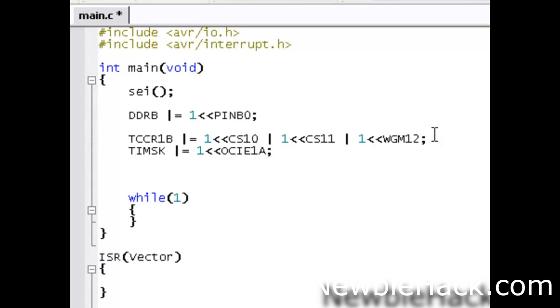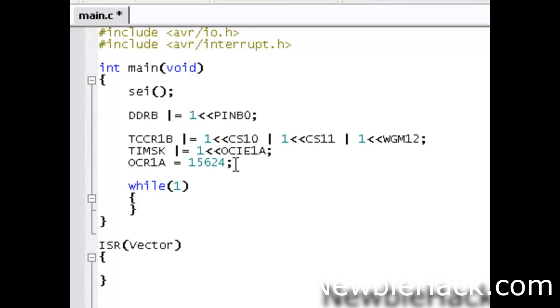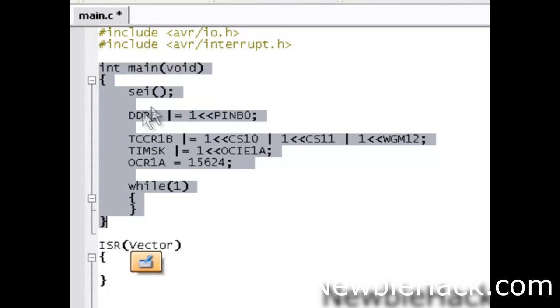Now, we can go ahead and access our OCR1B register, or 1A register. And we're going to make that equal to the number that we want it to compare with the TCNT1. So, we're going to go ahead and add the OCR1A register. And we're going to set this one to 15624, which is the compare register. Believe it or not, our main routine is actually finished. There was no more information needed in this.